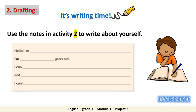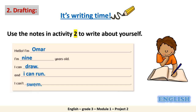Excellent! Now let's move to the second step, which is drafting. We are going to use the notes in activity 2 to write about ourselves. Again, remember to use only pencil. I will show you what I did, and then I want you to do it by yourself. Hello, I am Omar. I am 9 years old. I can draw and I can run. I can't swim. Now pause the video and do it by yourself.